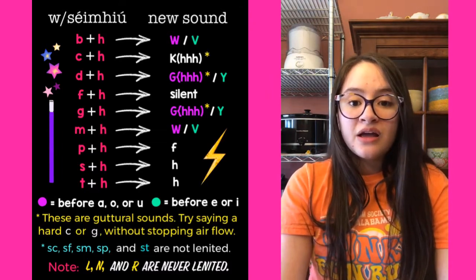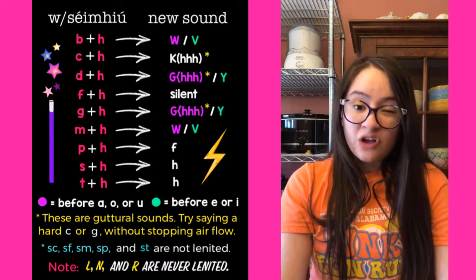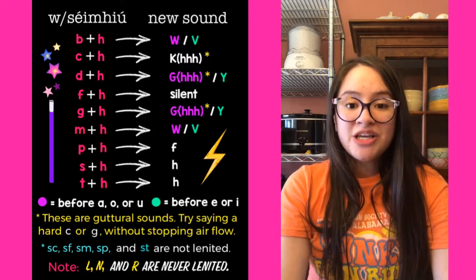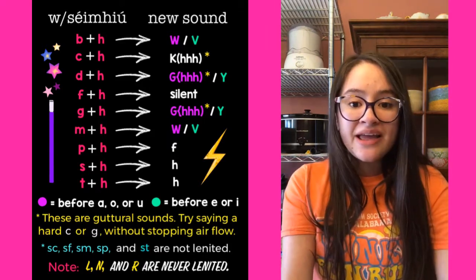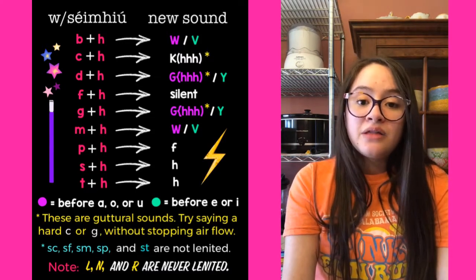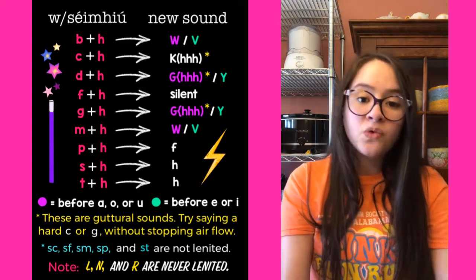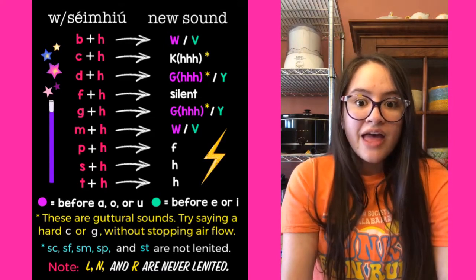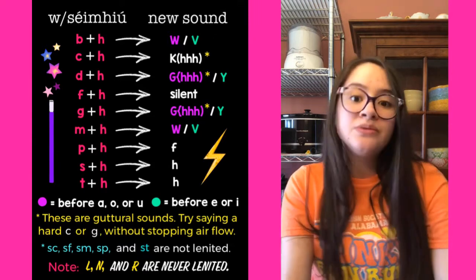DH sounds almost like a gargling sound or a Y. It makes the gargling sound before A or U, and Y before E or I. FH is completely silent — you ignore both the F and the H and say what's left of the word. GH sounds identical to DH: a guttural sound before A or U, and like Y before E or I. MH sounds like W before A or U and V before E or I — the exact same rule as BH. PH sounds like an F, like in 'pharmacy.' SH and TH both sound like an H.